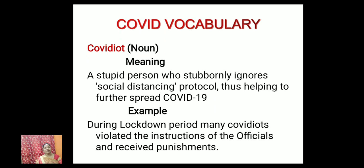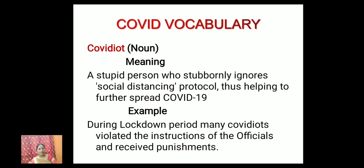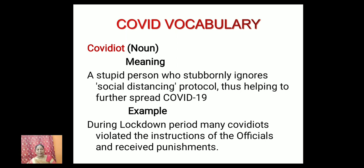Let's see the COVID vocabulary. The first word is COVID-idiot. It is a noun. It means a stupid person who stubbornly ignores social distancing protocol, thus helping to further spread COVID-19. For example, during the lockdown period, many COVID idiots violated the instructions of officials and received punishments.